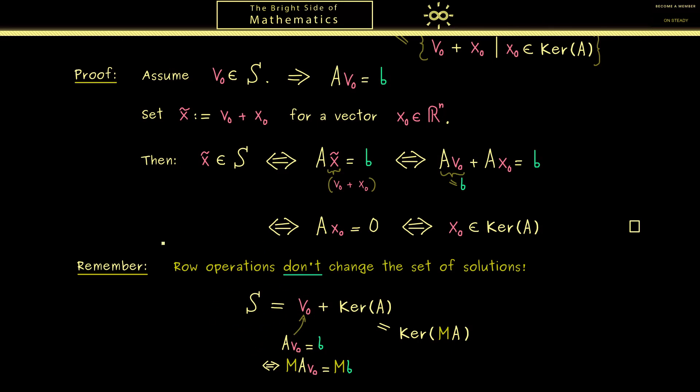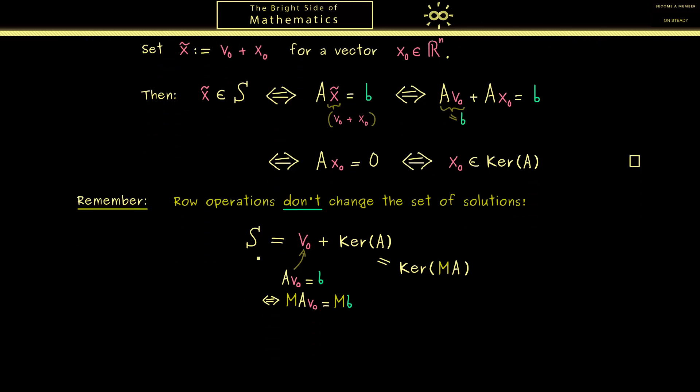Therefore, using row operations is the perfect manipulation for a system in order to find the set of solutions. Hence, this idea will lead us to the algorithm we already know by name—it's the Gaussian elimination. In all details, we will discuss it in the next video, but we already know it has to give us three parts. First, it has to tell us if b is actually an element of the range of A or not. This is important, because if this is not the case, we are already finished, because we know the set of solutions is empty.